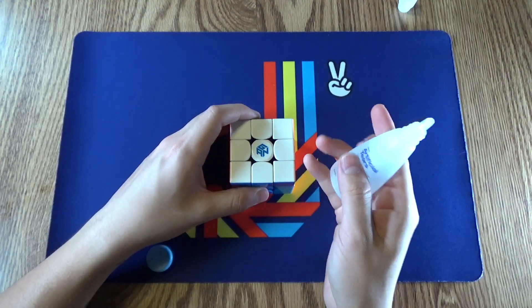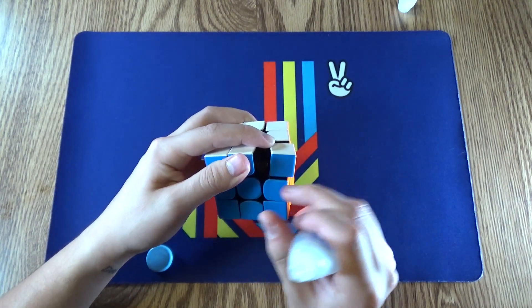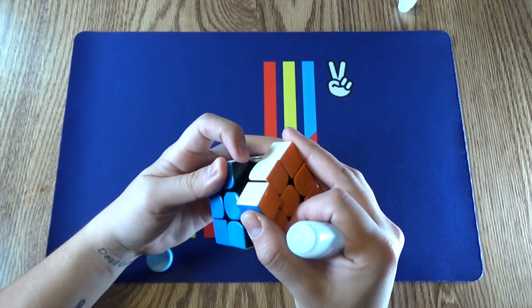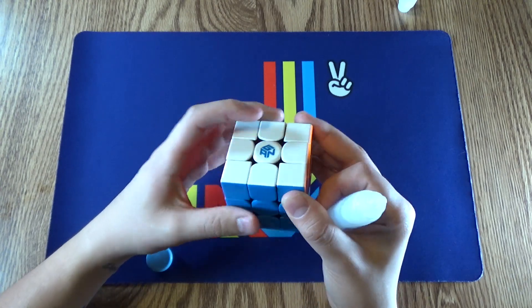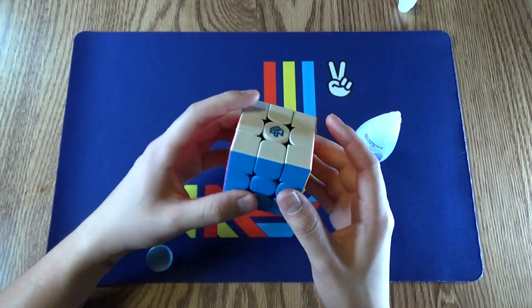So of course, just like any liquid lubricant, I will be placing one drop on the track pieces and one drop on the pieces themselves. This is the GAN 11M Pro, and it is completely dry.